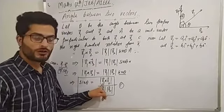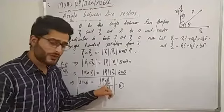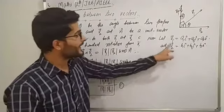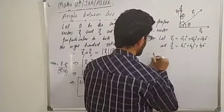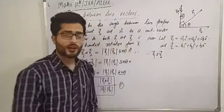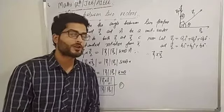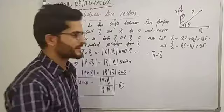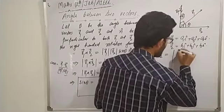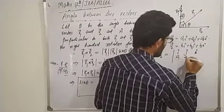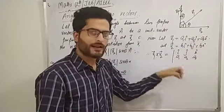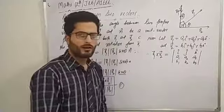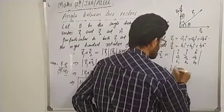To calculate sin(theta) between these component-form vectors, we need three things: magnitude of V1 cross V2, magnitude of V1, and magnitude of V2. First, V1 cross V2 equals the determinant of [i, j, k / a1, a2, a3 / b1, b2, b3]. Expanding by Laplace expansion along the first row, the i-component gives i(a2·b3 − a3·b2).